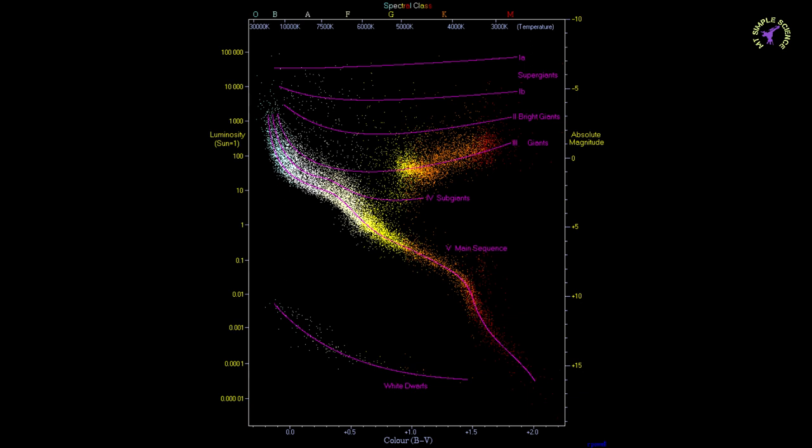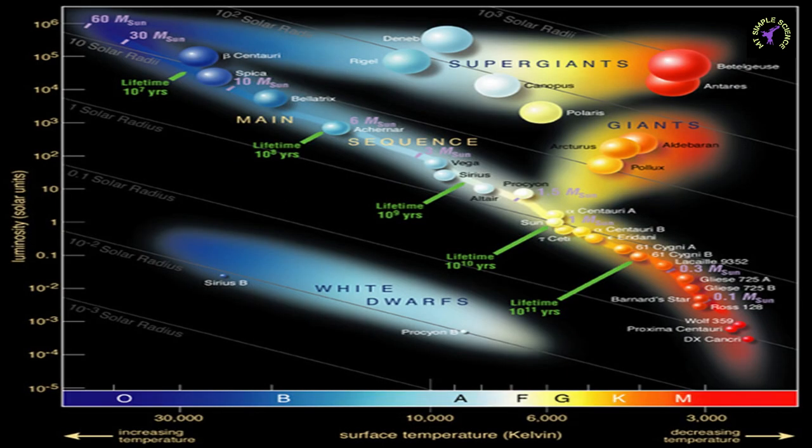The most prominent region is diagonal, going from upper left—hot and bright stars—to lower right—cooler and less bright stars—called the main sequence. In the lower left, stars are hot and blue but very faint, so they must be dwarfs. Above the main sequence, there are giant stars, and at the upper right region, there are stars which are cooler but still bright, so they must be supergiants.